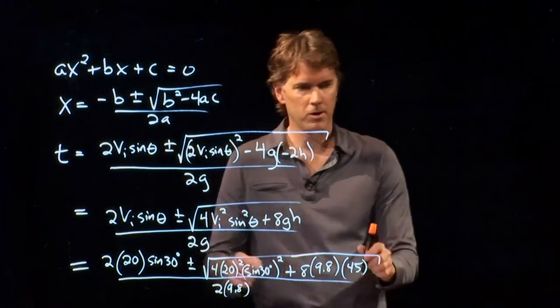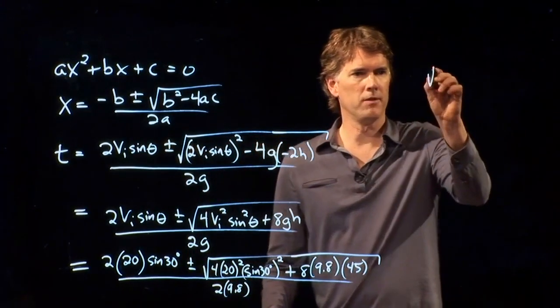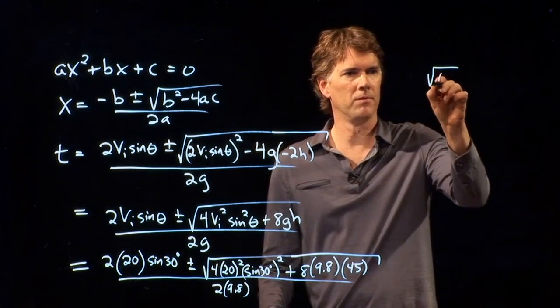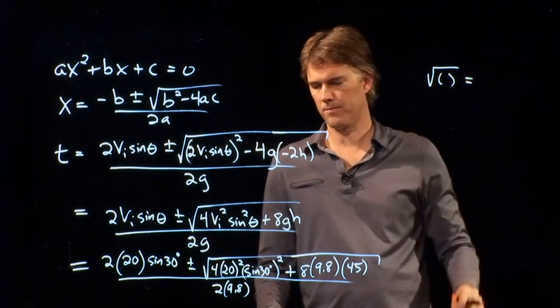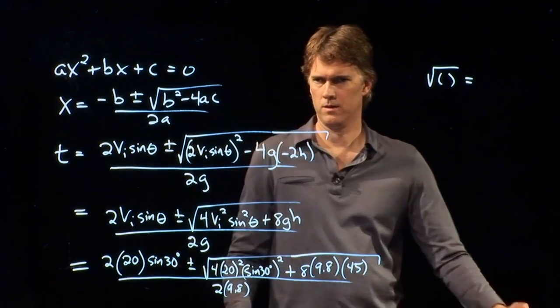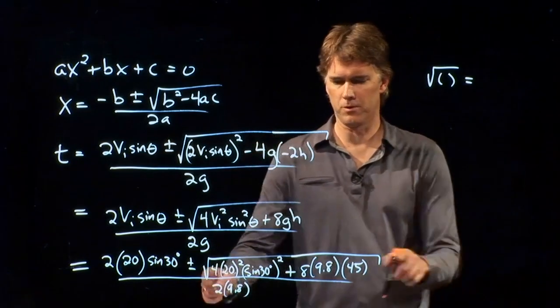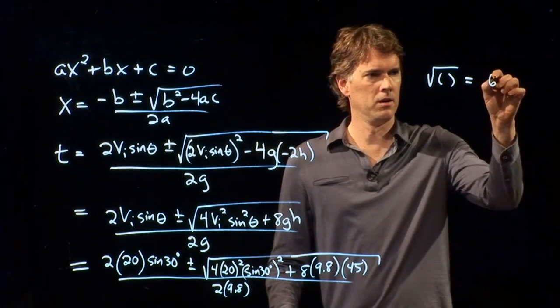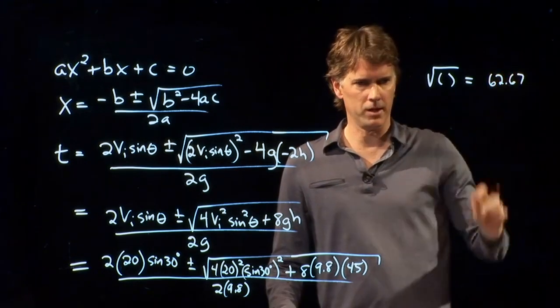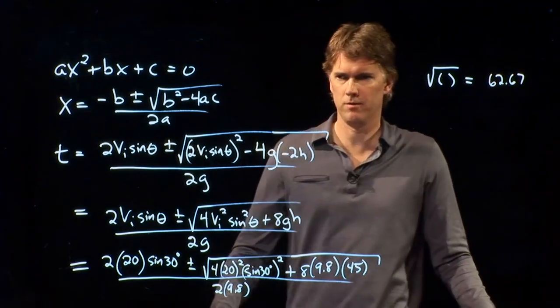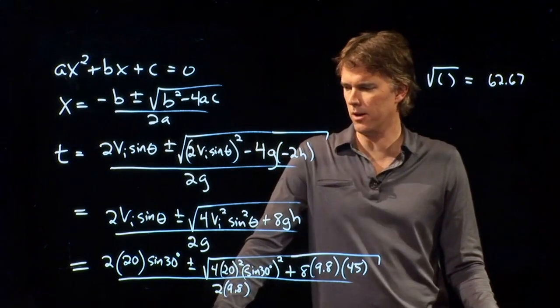And now this is where I want you to grab your calculators and plug in some of these numbers. So it's 2 times 20 times sine of 30 degrees plus or minus the square root of 4 times 20 squared times sine squared 30 plus 8 times 9.8 times 45, and then all of this over 2 times 9.8. So why doesn't somebody do the square root part first and tell me what you get for the square root? The square root is 62.67. Anybody else concur on that one? You concur? Excellent.